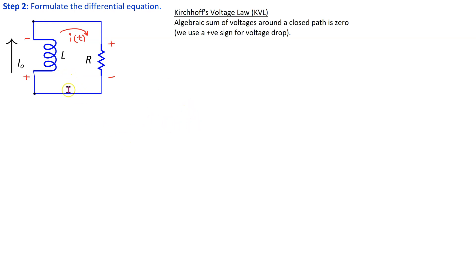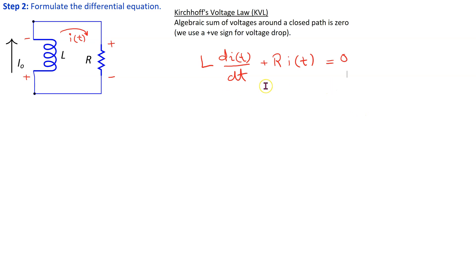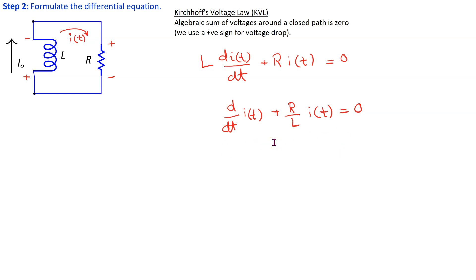We have the voltage across the inductor and the voltage drop across the resistor, and their sum equals zero. Using the fundamental property of an inductor, the voltage drop across the inductor is L·dI(t)/dt. The voltage drop across the resistor is R·I(t) by Ohm's law, and this sum equals zero. This is a first-order differential equation, which can be rearranged by dividing both sides by L to get: dI(t)/dt + (R/L)·I(t) = 0. The solution to this equation is the natural response of the RL circuit.